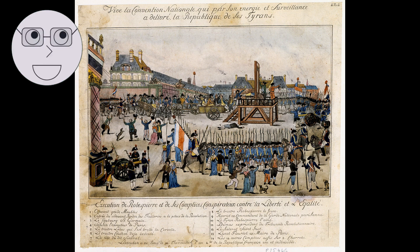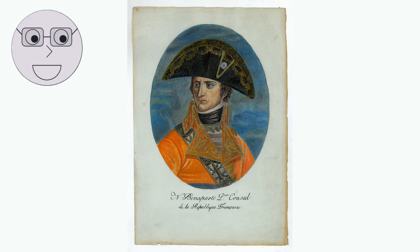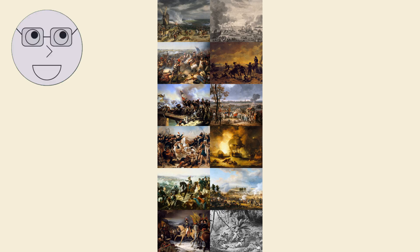The revolution then entered a new phase as a more moderate government was established. In 1799, Napoleon Bonaparte seized power in France and he established a new form of government known as the Consulate. This marked the end of the French Revolution and the beginning of a new era in French history. The French Revolution had a profound impact on France and the rest of Europe.